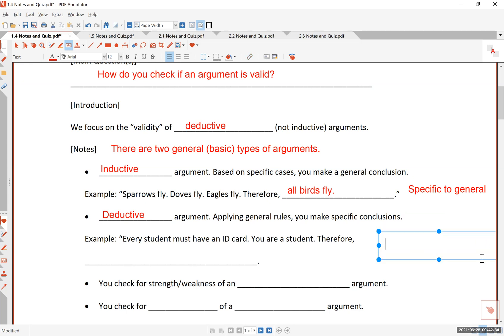So here we start with a general rule or a general statement, and then we apply that to a specific situation. So that is a deductive argument. Applying general rules, you make specific conclusions.